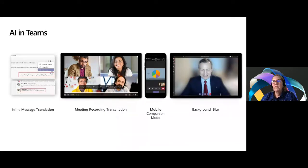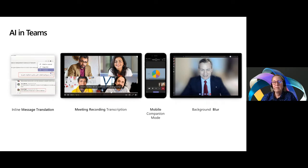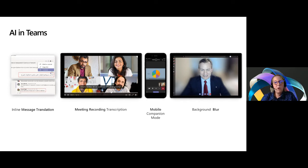We have AI-powered capabilities in Teams today, such as inline message translation, which allows you to translate messages in channels and chat in almost 40 languages. With a simple click, people who speak different languages can fluidly communicate, ensuring every worker has a voice and facilitating global collaboration. We also have meeting recording and transcriptions powered by Stream, enabling team members to easily catch up on missed meetings — you can read the transcription, search within the conversation, and play back all or part of the meeting. And with mobile companion mode, Teams lets you use your phone as a companion device to, for example, advance slides.